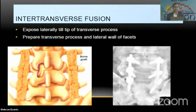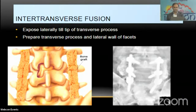For intertransverse fusion, the tips and tricks are: expose laterally to the tips of the transverse processes, prepare the transverse processes well, along with the lateral wall of the facets, even before placing screws. Put plenty of bone graft so that postoperatively you achieve good fusion masses, as seen in this illustrative X-ray.